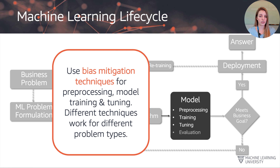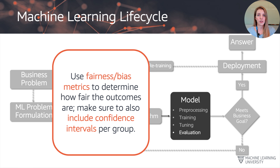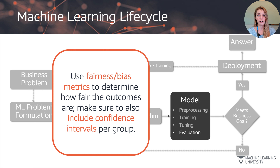There are different techniques that work for different problem types. For the evaluation itself, we will need to use fairness or bias metrics to determine the quality of the outcomes, and we should include confidence intervals per group. The evaluation will also cover the primary modeling objective — accuracy or minimizing error — but be careful to always have two measures: the primary model performance evaluation and the fairness or bias measure. These are equally important.